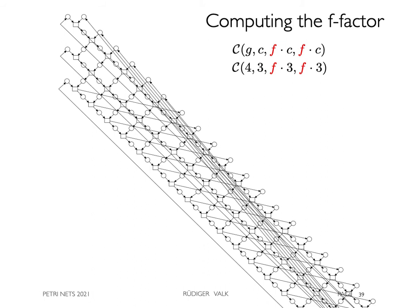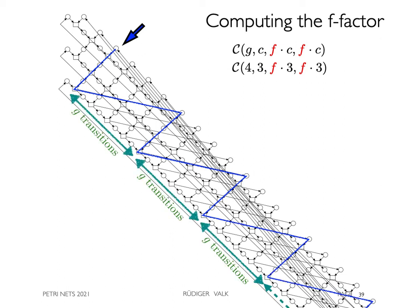How to compute the f-factor? Consider a co-process like here. From cycloid theory, we know that a car, A0 for instance, is part of this co-process after a number of g transitions again and again. Let us call it a g-step.